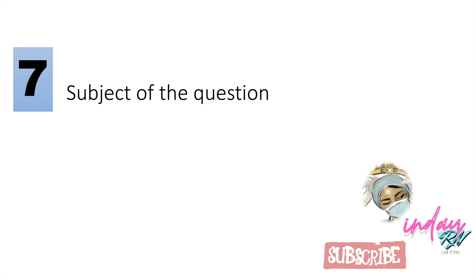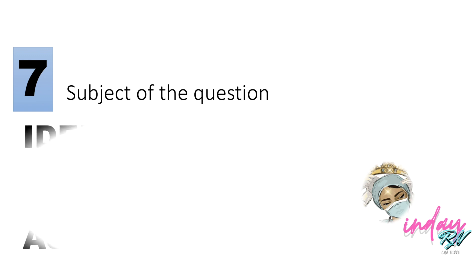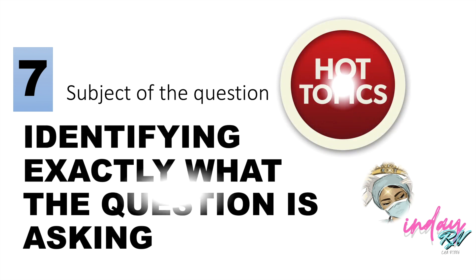The seventh strategy is to identify the subject of the question — know exactly what the question is asking. This will help you in the elimination process of incorrect choices. Once you determine the hot topic in the question, eliminate all answer choices that are not related to it.